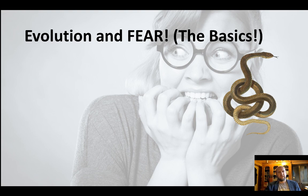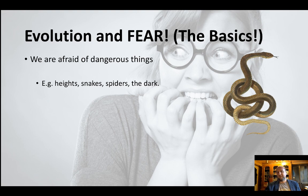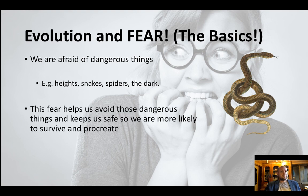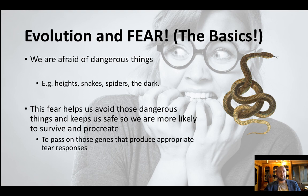Now let's look at a specific example: fear. This is a really good one to write about in exams because we can explain it from a number of perspectives and we have some pretty good research to support it. We tend to be afraid of dangerous things — spiders, snakes, the dark, heights — things that can hurt us. Fear helps us to avoid those things: to stay out of the dark where danger might lurk, to avoid dangerous animals and people. If we're afraid of these things, we're more likely to avoid them, helping us survive long enough to pass on our genes.